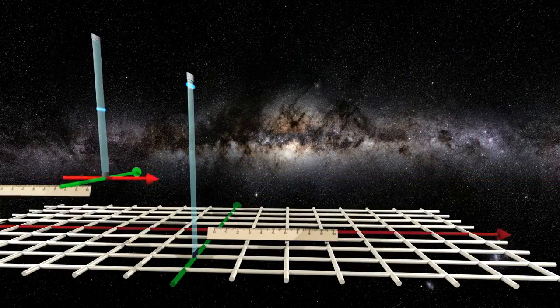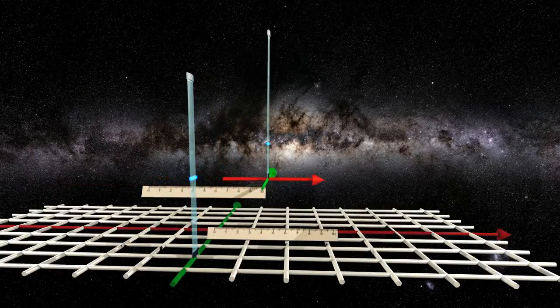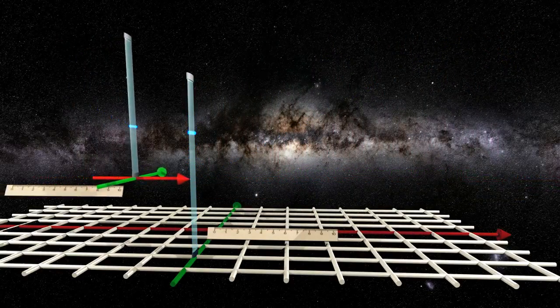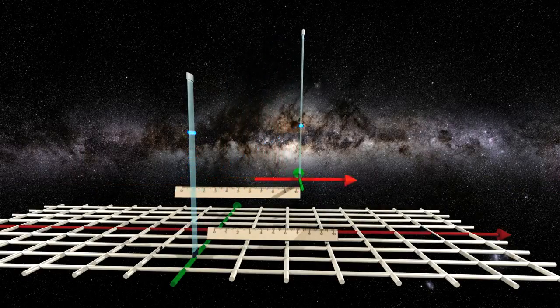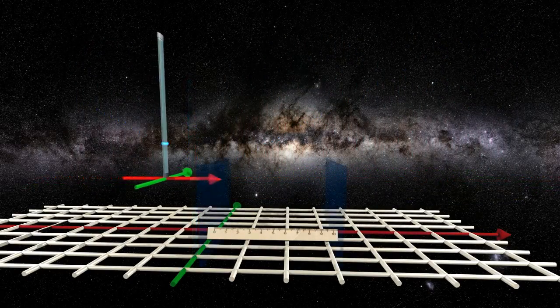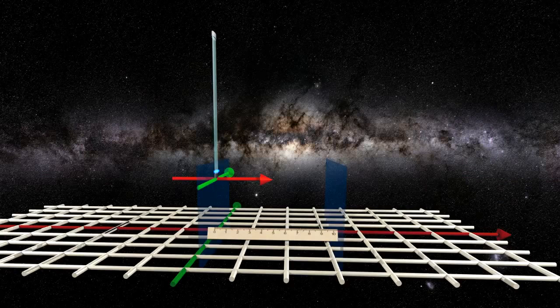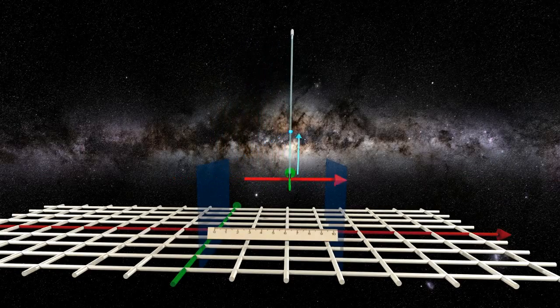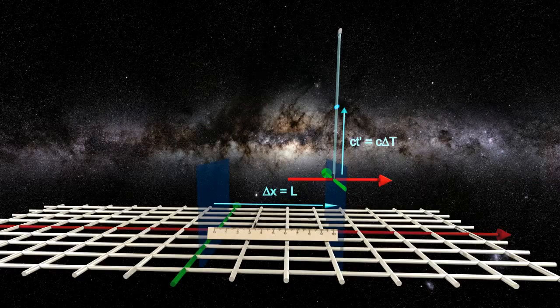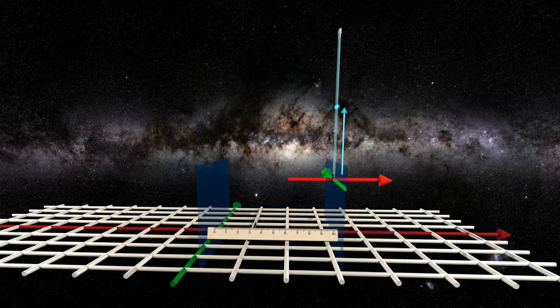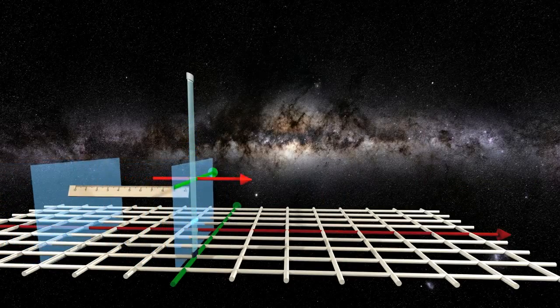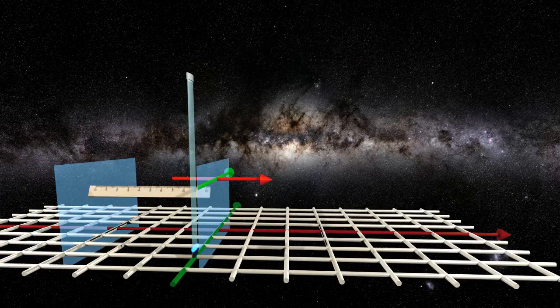But since the frames pass each other at equal and opposite velocities, each clock must pass the other one's ruler during the same length of its own time. Let us say the moving clock measures the stationary ruler passed by during time delta t. Then the stationary clock must also time the moving ruler passed by during the same time delta t.